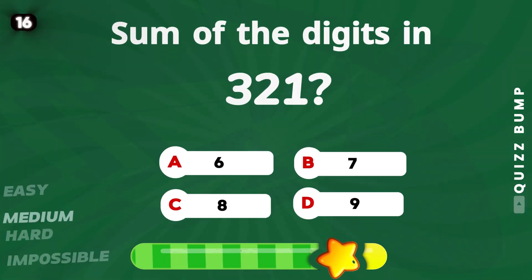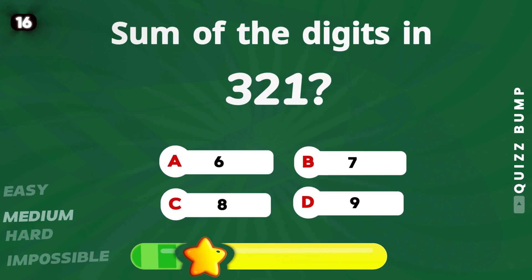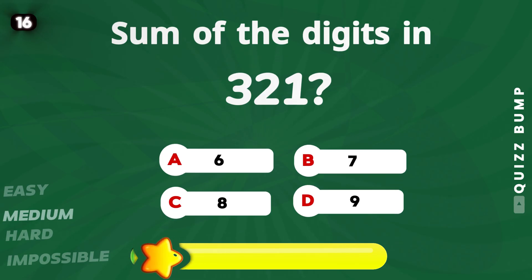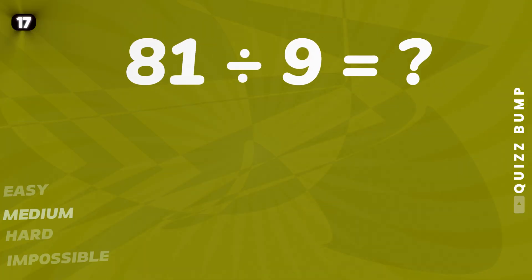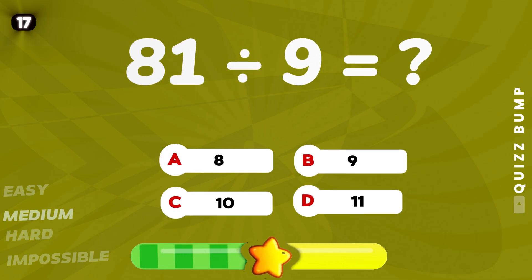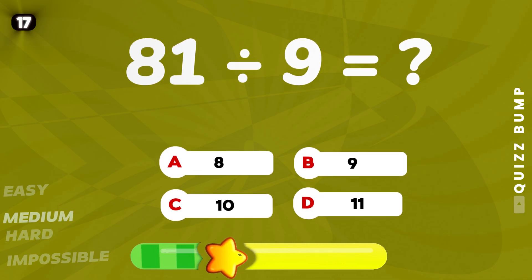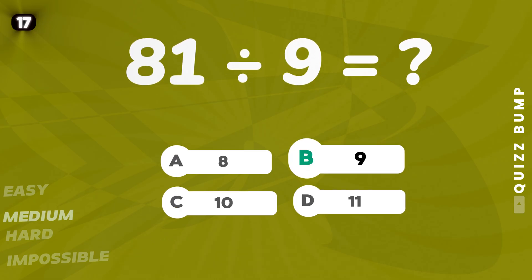What is the sum of the digits in 321? The answer is 6!